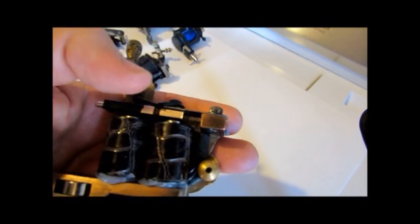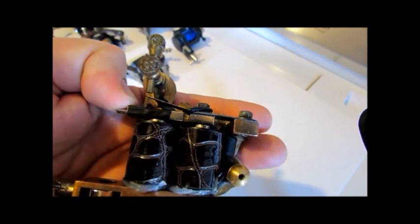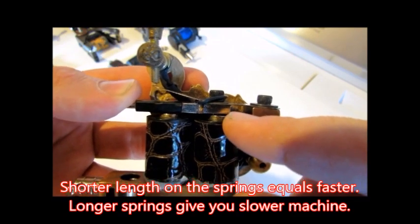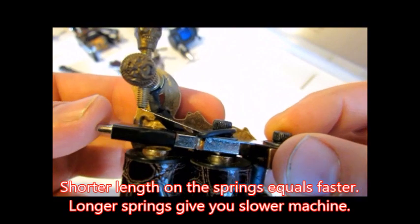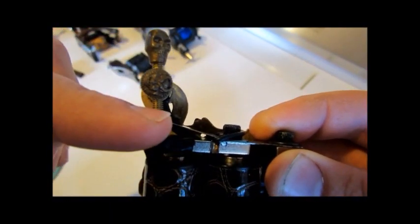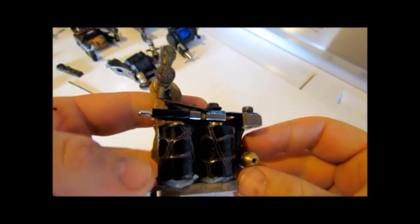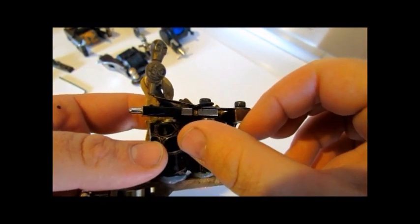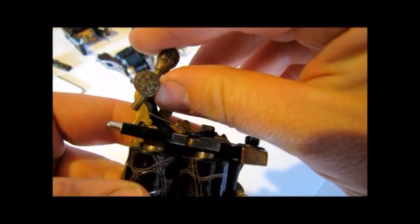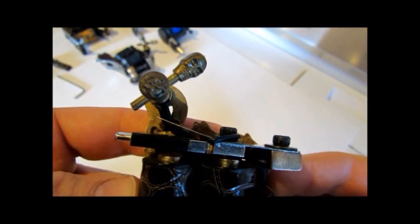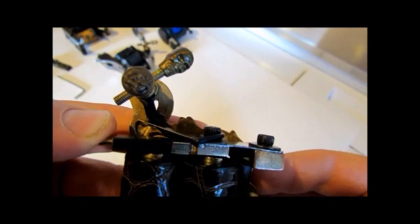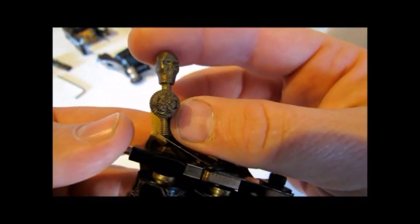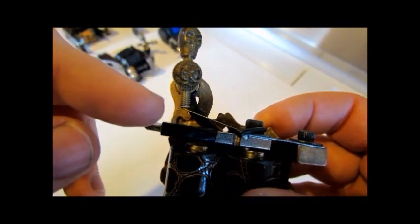You don't need a lot of throw and you want a faster machine. You don't need as much of a gap between your rear deck and the back of your armature bar. Because the springs are shorter, my contact screw is at a 90 degree angle. If I needed more gap here, that would give me a longer spring, and my contact screw would be more out here, like on a color packer. But for a liner, I don't need that, so my contact screw can be at this angle.